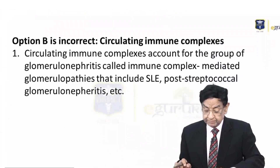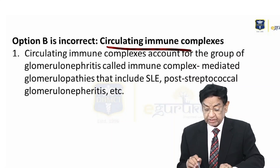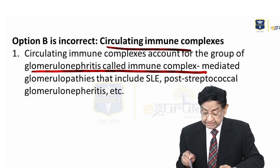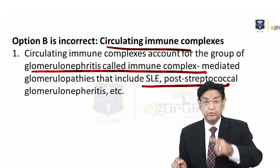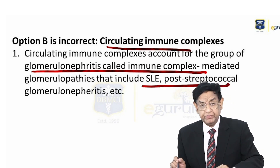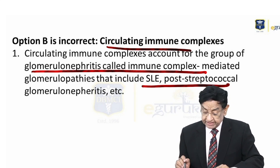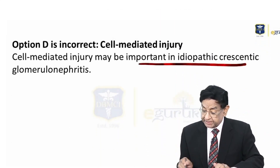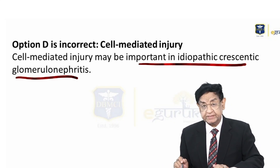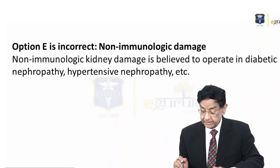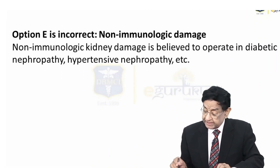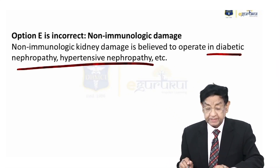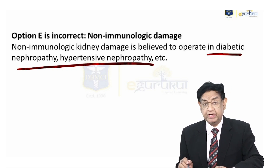Option B — circulating immune complex — is the wrong answer. This we see in immune complex glomerulonephritis like SLE and post-streptococcal. Cell-mediated immunity may be important in idiopathic crescentic glomerulonephritis. Non-immune mechanisms are seen in diabetic nephropathy and hypertensive nephropathy, where there is no immune phenomenon.